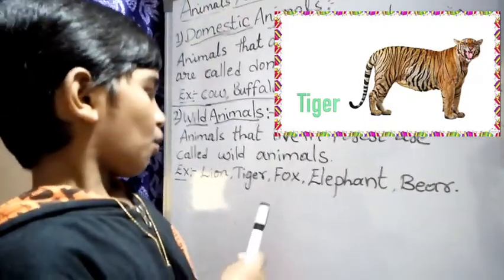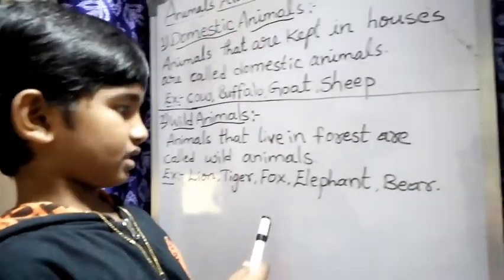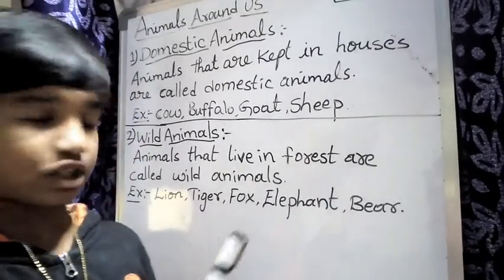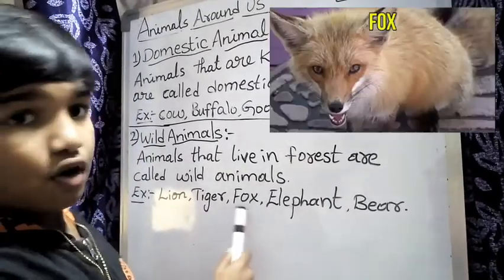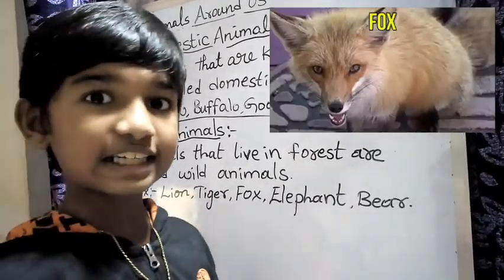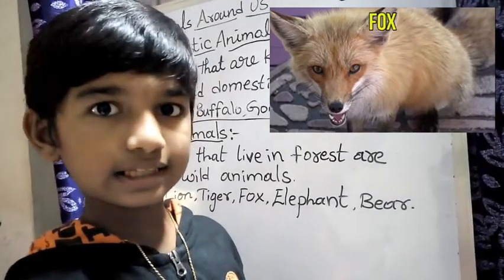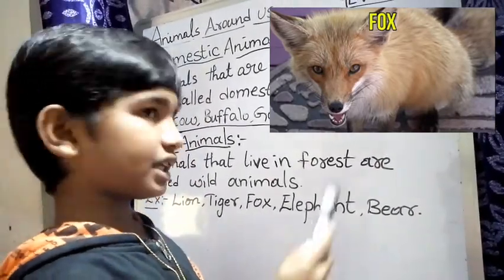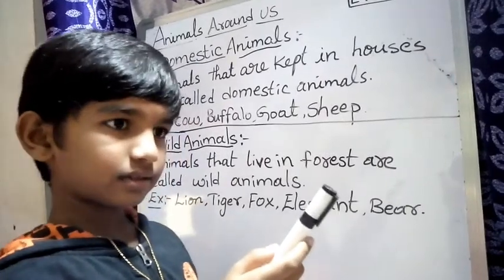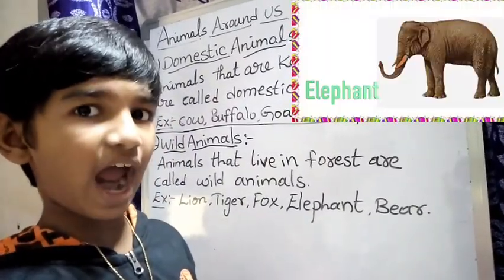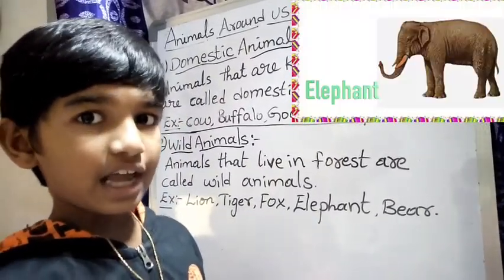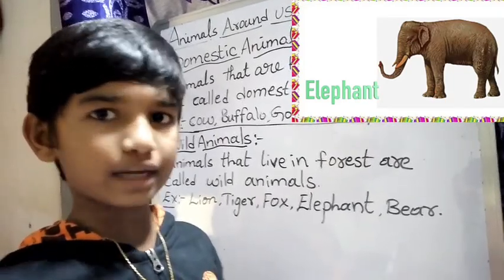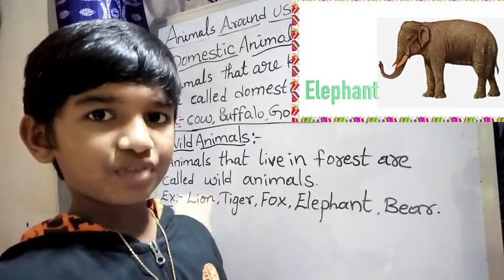Now next — what is that animal? Yes. Fox. Fox is a very intelligent animal. Next — what is that animal? Yes. Elephant. Elephant is a big and strong animal.